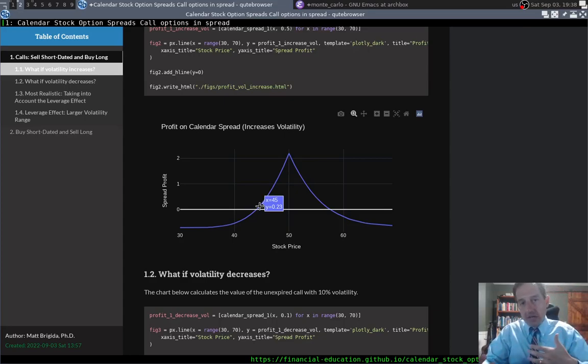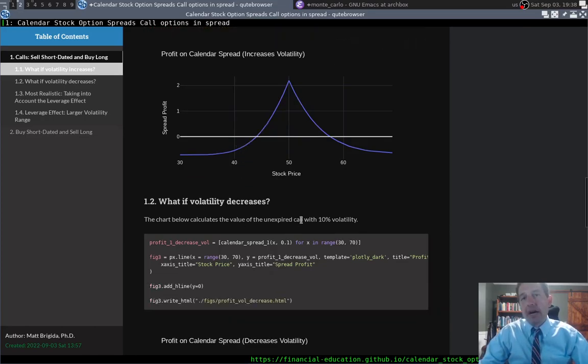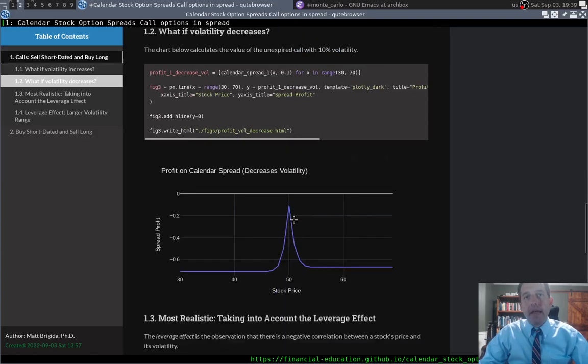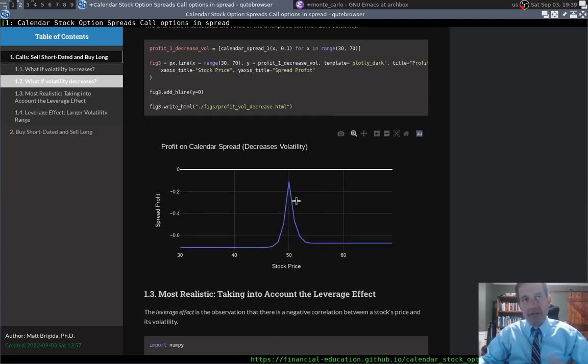Of course, there's a two-way street. If volatility declines, we'll be worse off. So here I assumed, and this is kind of a drastic drop, but volatility dropped all the way to 10%, and nothing else changes. The risk-free rate is still the same and so forth. So now the spread never, we lose no matter what the underlying stock price is, if the volatility is 10%. So definitely we're better off if volatility increases, we're worse off if volatility declines.